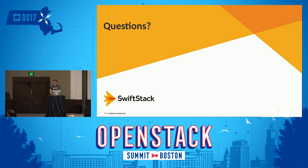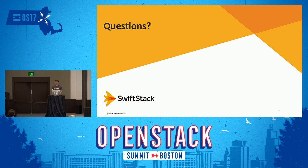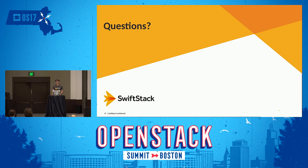Audience question: Besides traditional requests like putting and getting objects, did you ever have requests for supporting other S3 features? For example, in Swift itself we have expiring objects, and in S3 you can define a lifecycle policy that also expires objects — there are API requests to support that. Tim: I've not looked into supporting it yet. I'm willing to bet customers have asked about it. The policy documents are kind of complicated, and trying to expire objects to another storage tier would be interesting but hard.